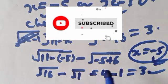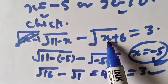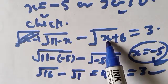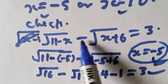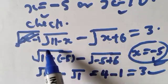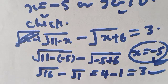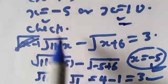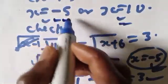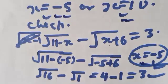Now checking x equals 10: square root of 11 minus 10 minus square root of 10 plus 6, equals square root of 1 minus square root of 16, equals 1 minus 4, equals minus 3. This gives minus 3, not 3, so x equals 10 does not satisfy the given equation. Therefore our answer is x equals minus 5.